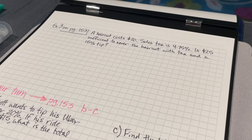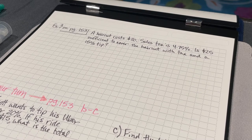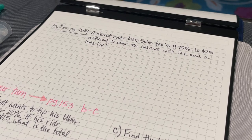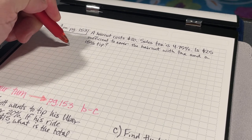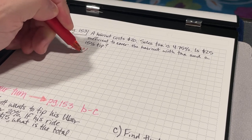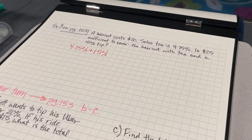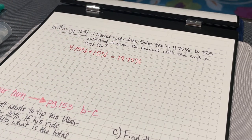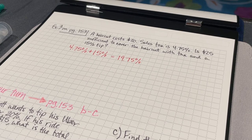Example three is a little bit different. Here's what we have. We know that a haircut is going to cost $20. The sales tax on that haircut is 4.75%. What we want to know is, is $25 sufficient to cover the haircut with tax and a 15% tip? What I'm going to do is I'm going to take both of my percents. I'm going to take my 4.75% and I'm going to add on the 15%. That's going to give me a total of 19.75%. So, I'm going to basically take the $20 and then I'm going to add on 19.75%.